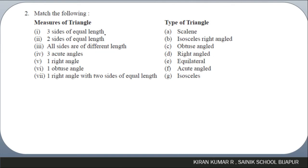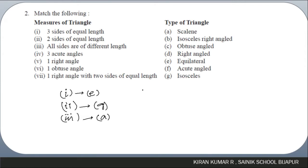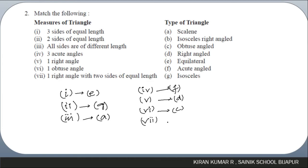If all three sides are of equal length, it forms an equilateral triangle — option E. If two sides are equal, it forms an isosceles triangle — option G. If all sides are different, it forms a scalene triangle — option A. Three acute angles gives an acute-angled triangle. One right angle gives a right triangle — option D. One obtuse angle gives an obtuse-angled triangle — option C. One right angle with two sides equal gives an isosceles right triangle — option B.